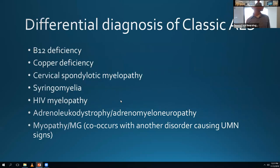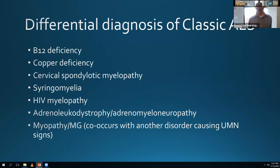Differential diagnosis of ALS is really important because ALS is mostly a clinical diagnosis with the help of EMG, and it's really ruling out other things. On average it takes about a year for patients to get that diagnosis from when they first start presenting to a doctor. A lot of neurologists are afraid to give that diagnosis in case they're wrong, and also because it's a hard diagnosis to deliver.